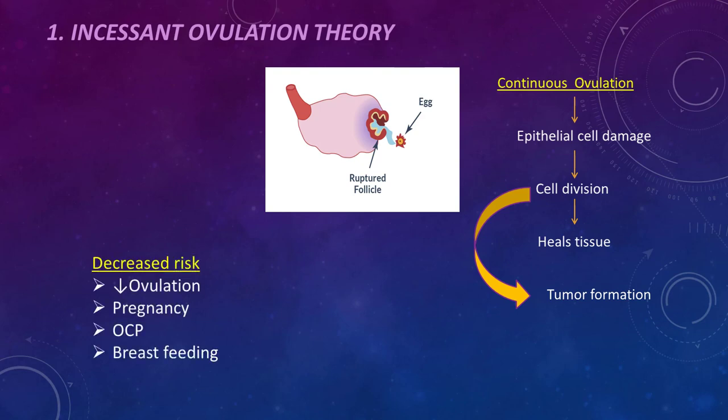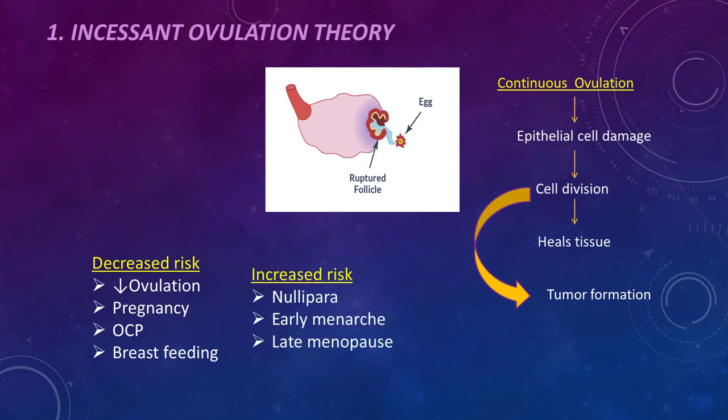Women with decreased ovulation have a decreased risk of ovarian tumor. These include women during pregnancy — nine months of decreased ovulation — those using oral contraceptive pills, and those breastfeeding, which causes decreased ovulation or anovulatory cycles. Increased risk is seen in nulliparous women with no pregnancy and no breastfeeding, resulting in more ovulation and more cell division. Early menarche and late menopause also increase risk, giving the female a longer period of ovulatory cycles.